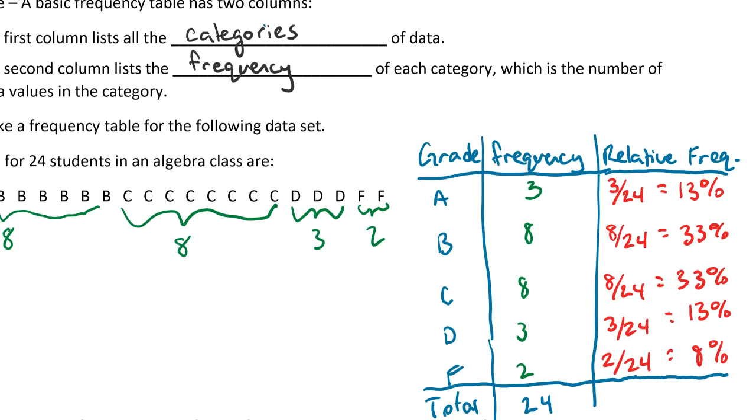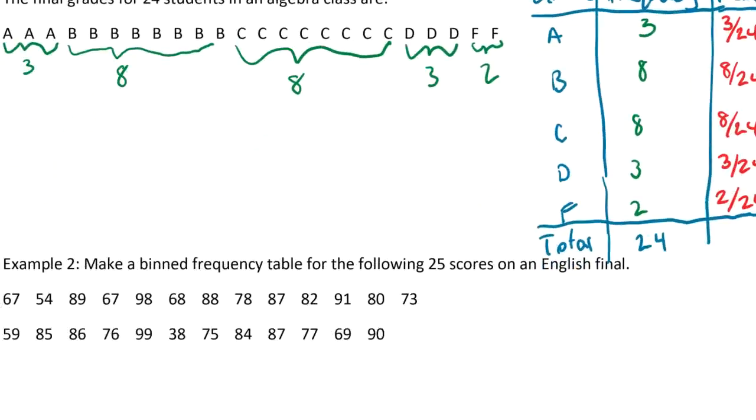Now one thing to note about the relative frequency is if you add all of those up, the total should now be 100%, because it encapsulates everything in this table. So it should always add up to 100%. Let's take a look at another example.